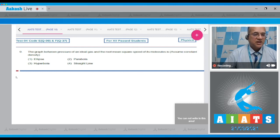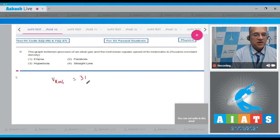Question number 9: The graph between the pressure of an ideal gas and the root mean square speed of its molecules, assuming constant density. Dear student, the formula for the root mean square velocity, Vrms, is also equal to 3P divided by rho, under root.